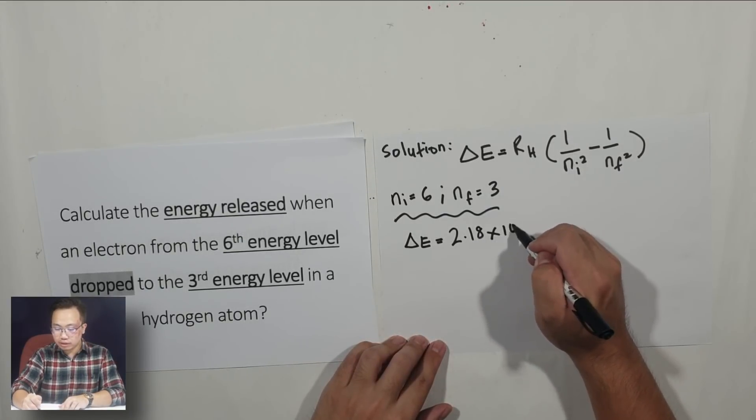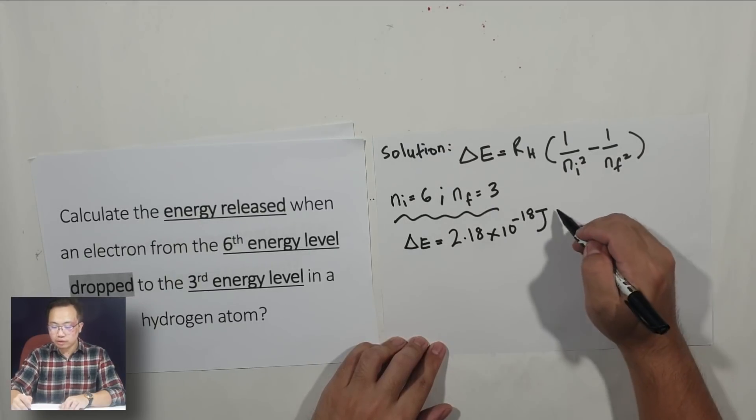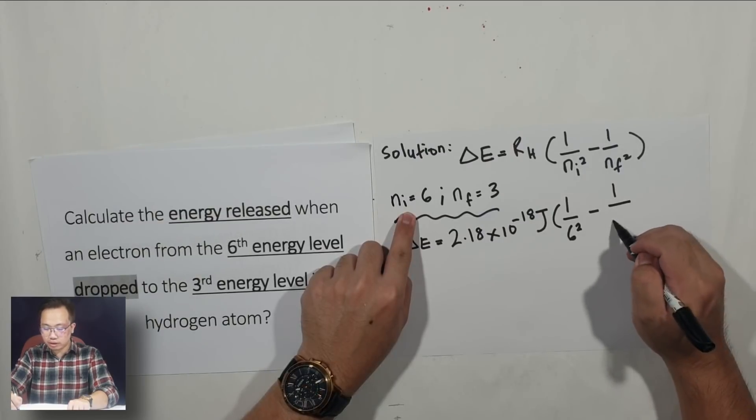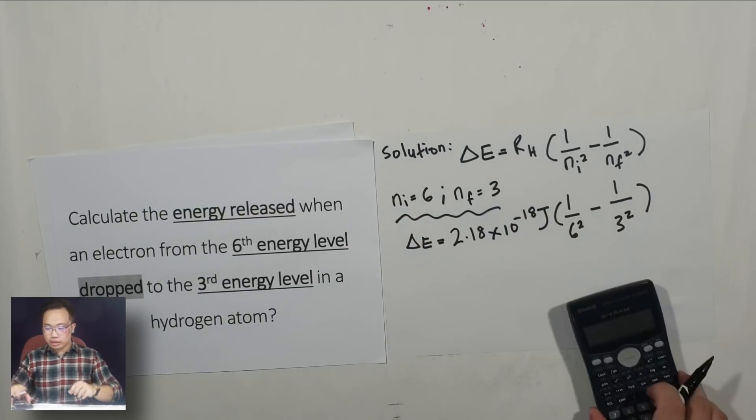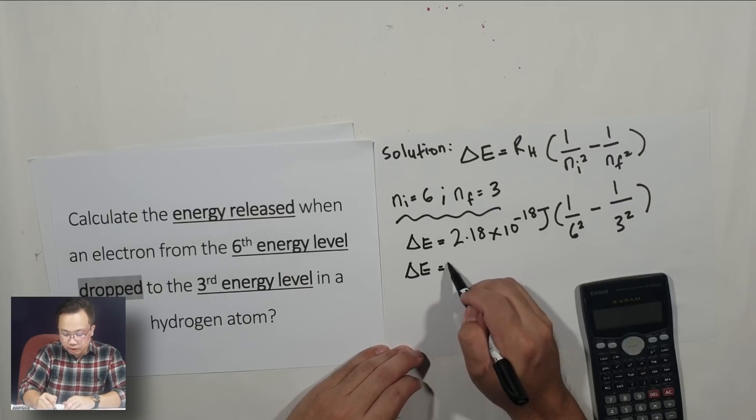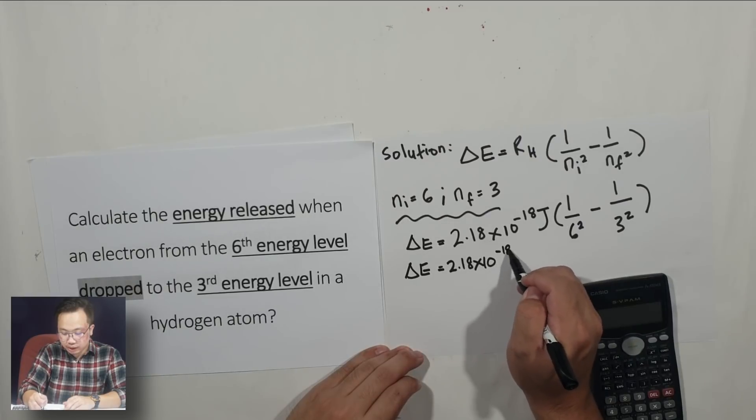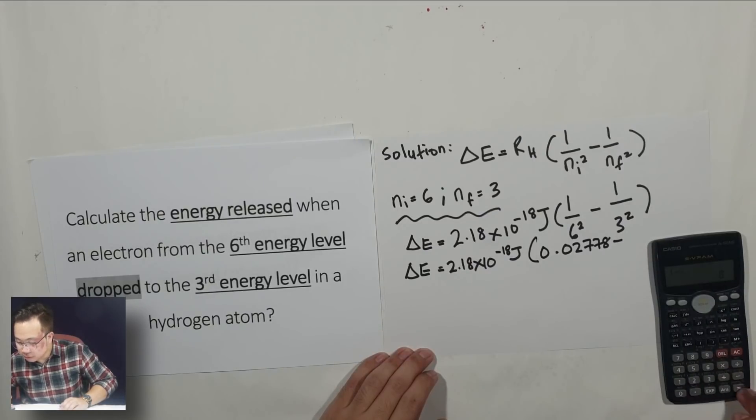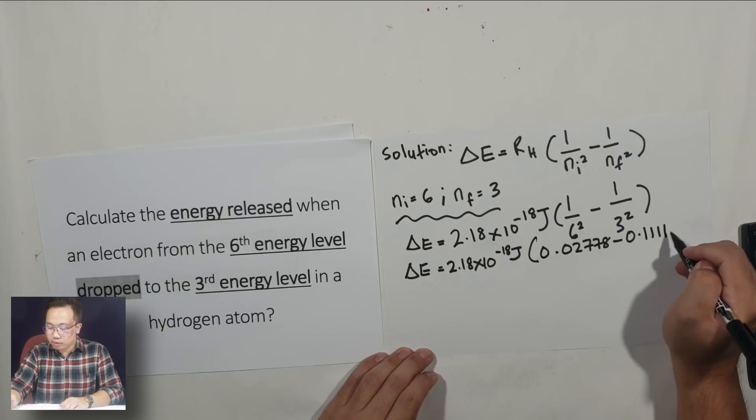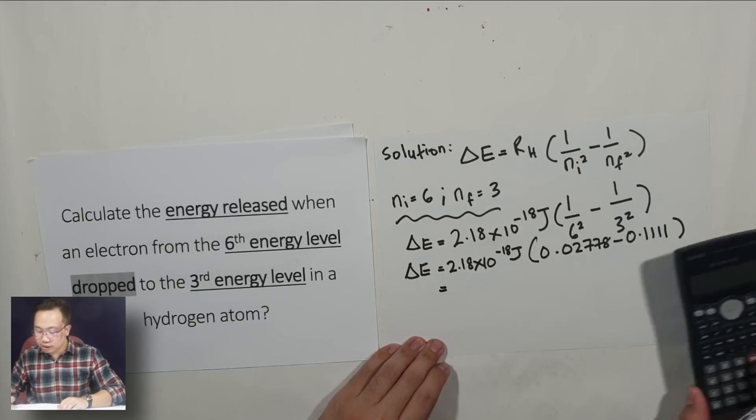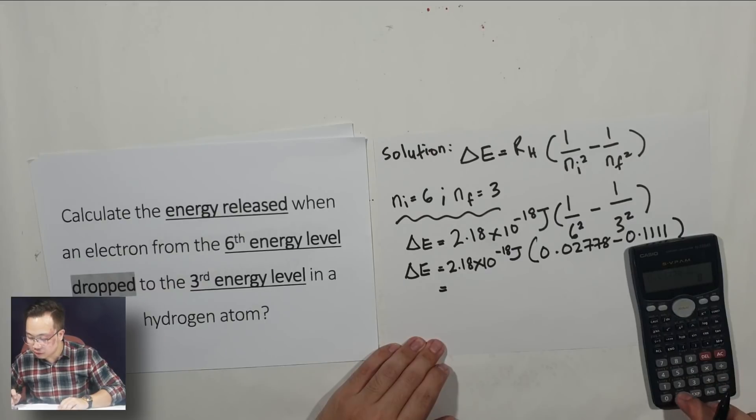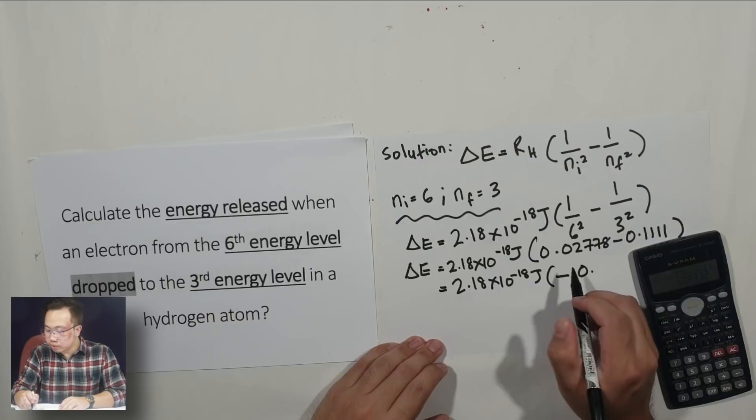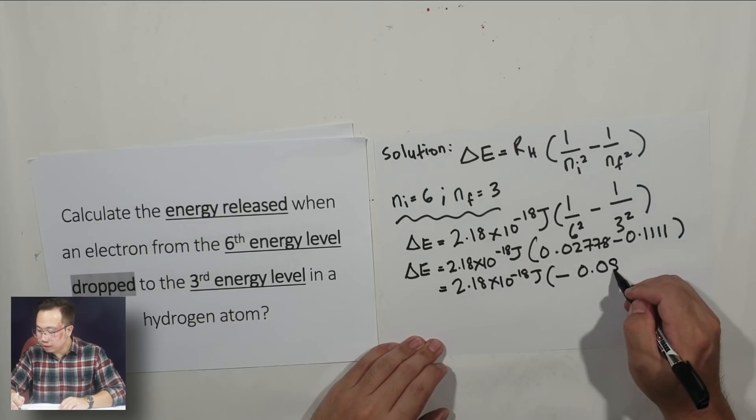So, 2.18 times 10 to the negative 18 Joule, times 1 over initial squared, 6 squared, minus 1 over 3 squared. Let's do that one by one. 2.18 times 10 to the negative 18 Joule, 0.02778 minus 0.1111. What is 0.02778 minus 0.1111? Times 10 to the negative 18 Joule, negative 0.08332.